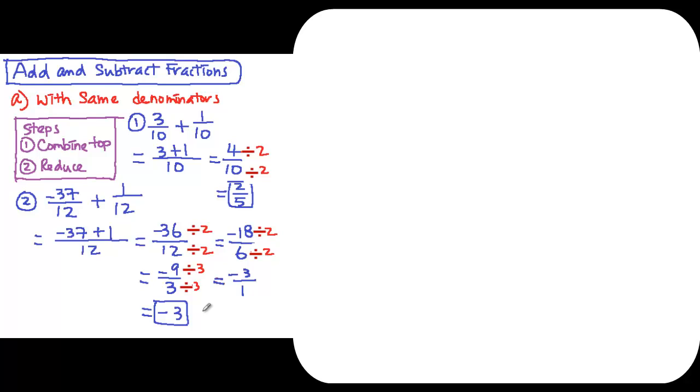I'm going to write down the steps for you. The first step is you need to find the lowest common denominator. After you get the LCD, you want to get both fractions with the same denominator. When you have the same denominator, you just do what we did earlier. You combine the top and you reduce the fraction.